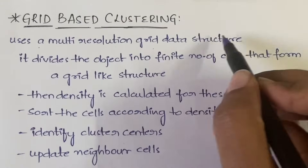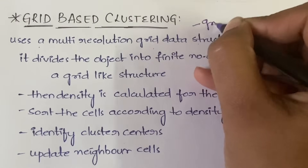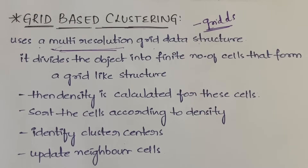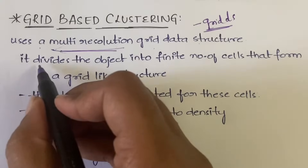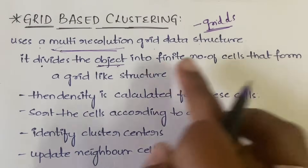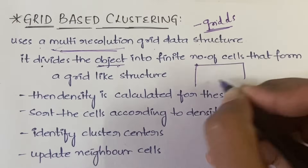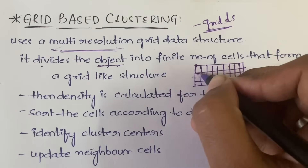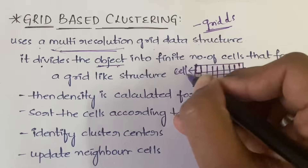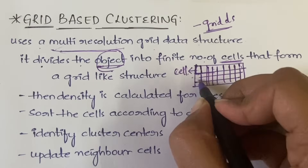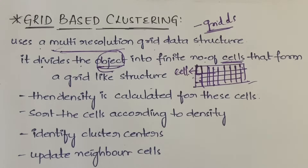Grid-based clustering uses a multi-resolution grid data structure. It is called multi-resolution in order to give more clarity and more detailed information. What it will do is divide the data object into a finite number of cells that form a grid-like structure. Each small structure within the grid is called a cell, so you will have a countable number of cells forming that grid-like structure.